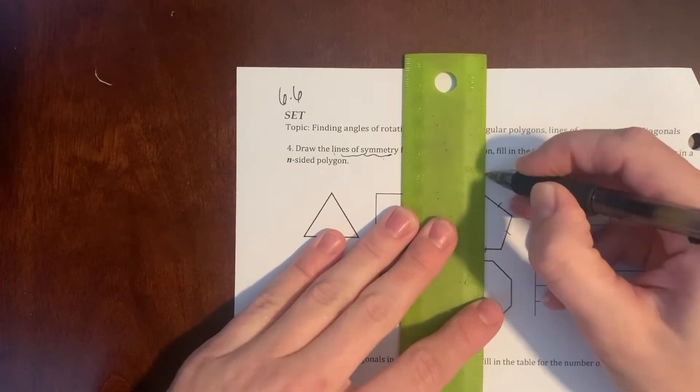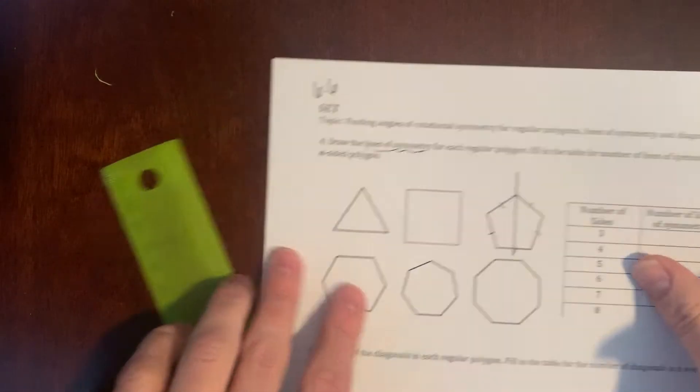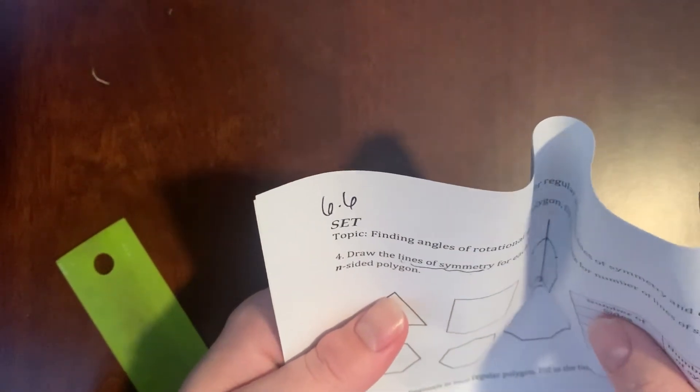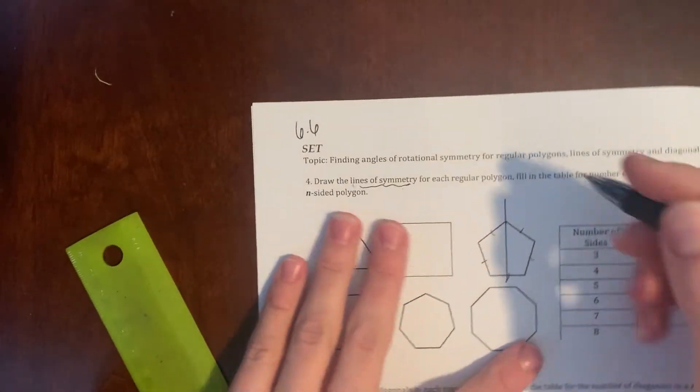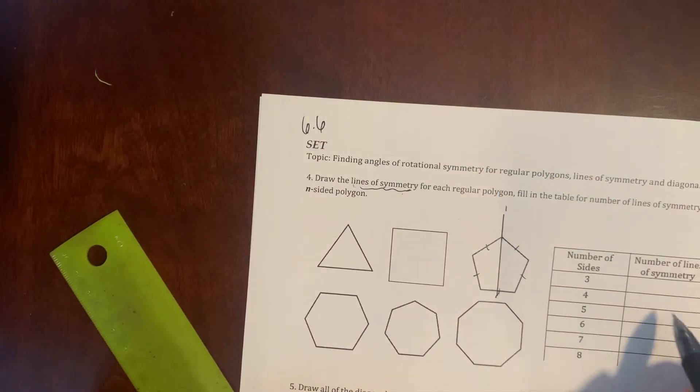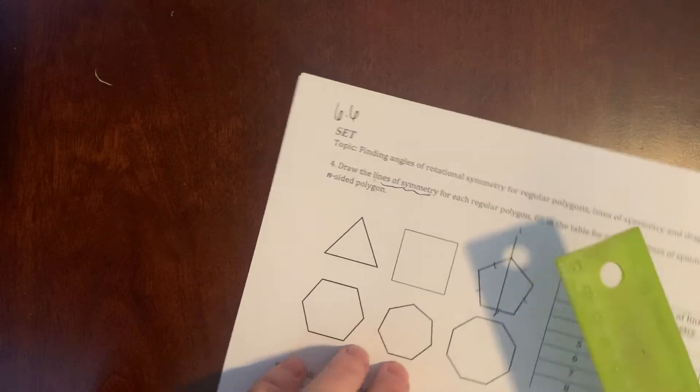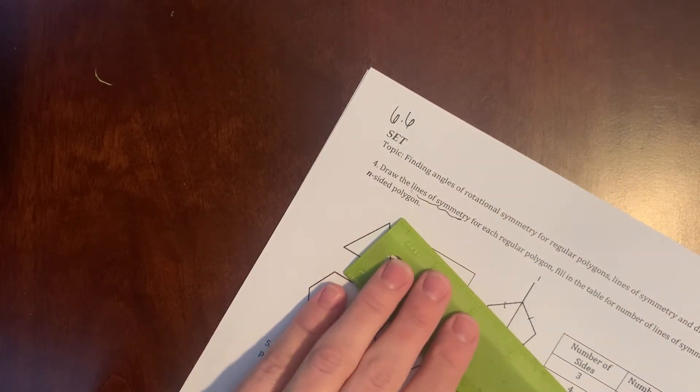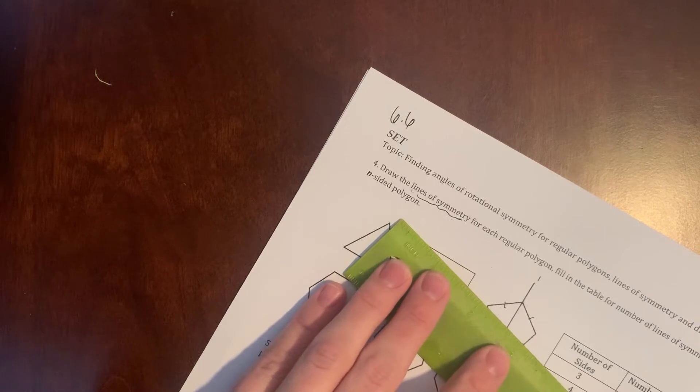And I want to draw on all the lines. So again, we did this on our notes. If you go from the vertice to the midpoint across, that's going to create another line.